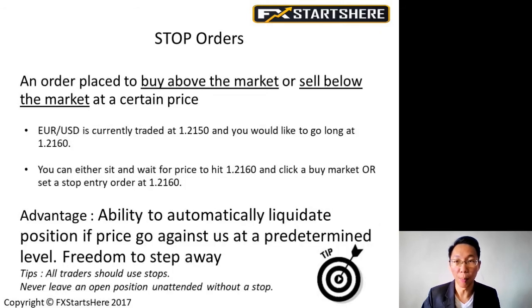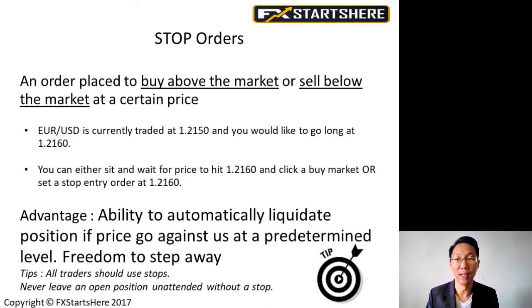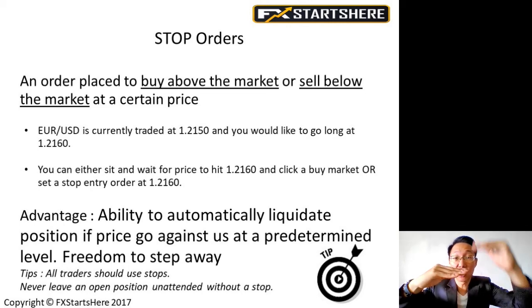Next we move on to stop orders. A stop order is placed to buy above the market or sell below the market at a certain price. In this example, EURUSD is trading at 1.2150 and you would like to go long at 1.2160. You can either sit and wait for the price to hit 1.2160 and click a buy market order, or you can set a stop entry order at 1.2160 — that is, place a buy stop at 1.2160. The advantages are the ability to automatically enter a position at a predetermined level and freedom to step away.